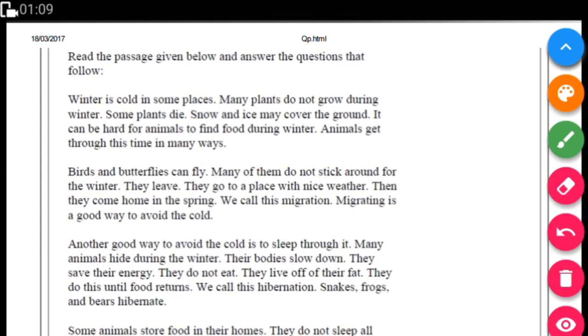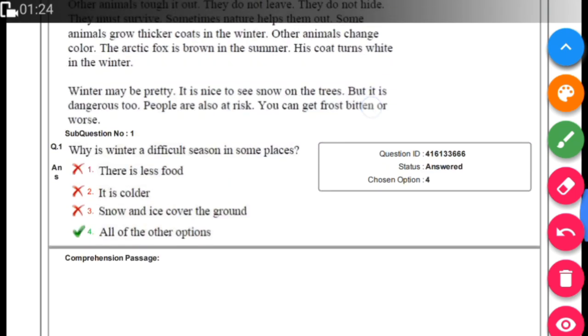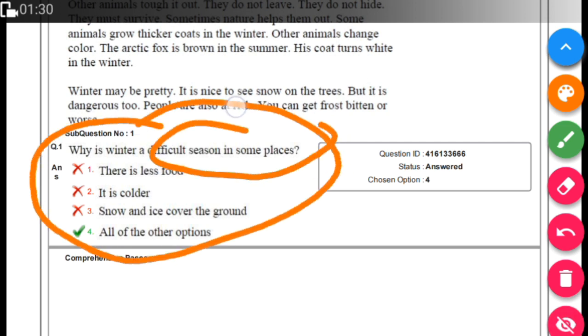Here are very simple questions. As I explained in the last video about how to solve the English paper, I'll discuss again how to solve unseen passages. First, I always recommend that you read the questions first. The question asks why winter is a difficult season in some places, so you know it's about the winter season, then go to the passage.